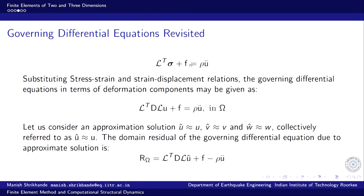That is the governing differential equation. Since sigma = D·epsilon and epsilon = L·u, substituting gives sigma = D·L·u. The full governing differential equation in terms of displacement becomes: L-transpose·D·L·u + f = rho·ü in omega, the domain of the problem. This is obtained by making use of the stress-strain relationship and strain-displacement relationship and substituting into the governing differential equation.